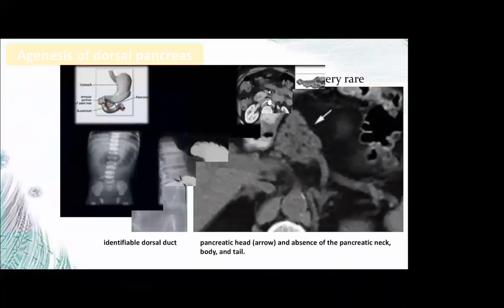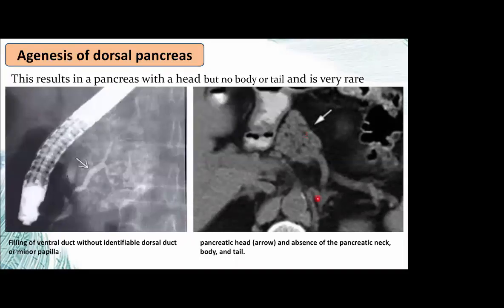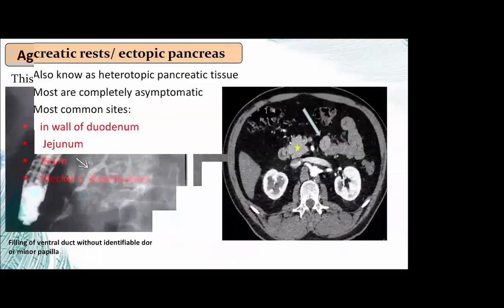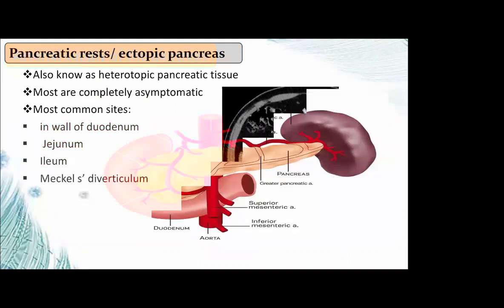Agenesis of the dorsal ventral pancreas results in a ventral pancreas with head only — no tail, no neck, no body. On ERCP, it shows only the ventral ducts. Heterotopic pancreatic tissue is most often completely asymptomatic. The most common sites are the duodenum, ileum, and Meckel's diverticulum.